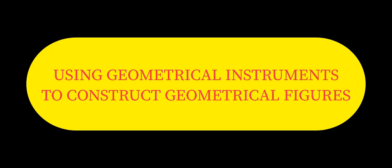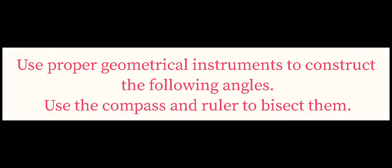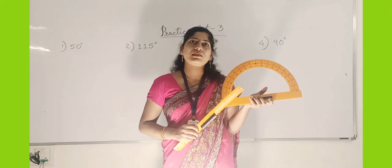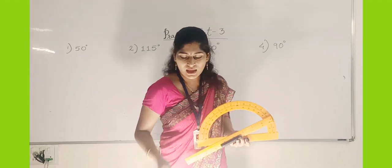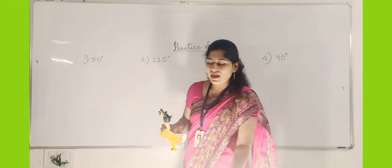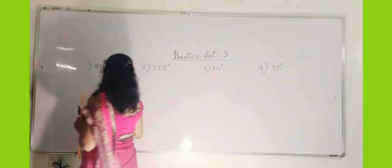Now let us see how to use geometrical instruments to construct geometrical figures — to draw an angle bisector using a compass. Practice Set Number 3: use the proper geometrical instruments to construct the following angles using the compass and the ruler, and then bisect them. Let us start. You are seeing the protractor, the scale, and your compass — and a rounder also. See the first question. The first question is 50 degrees.